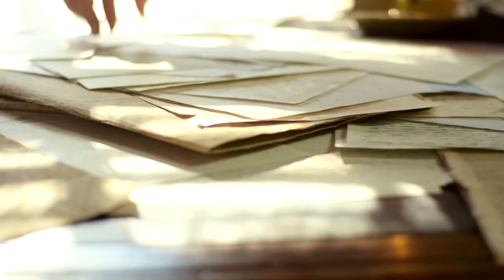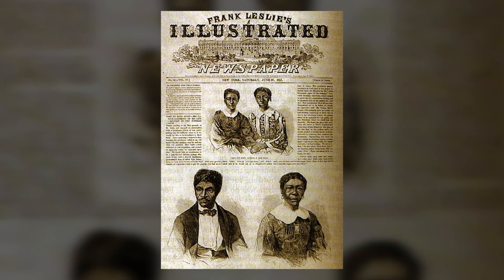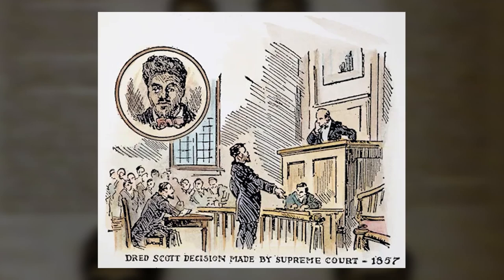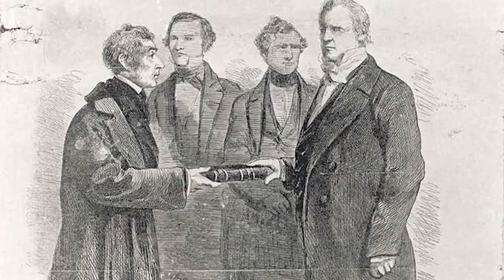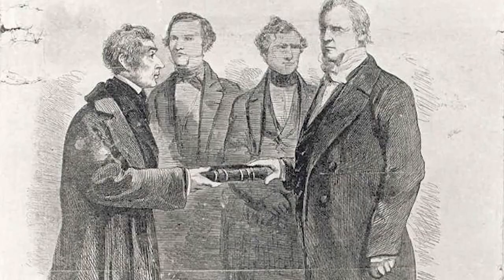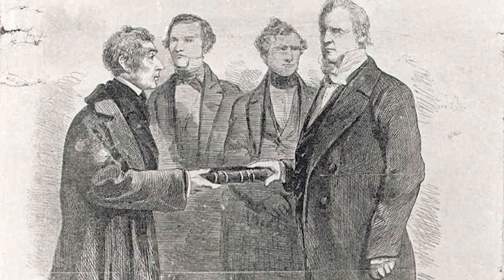Moreover, Buchanan actively interfered with slaveholding interests and attempted to influence the court's decision in Dred Scott v. Sanford. In that decision, the Supreme Court denied slave Dred Scott the right to citizenship and also recognized that Congress could not prohibit slavery in the territories. Buchanan tried to influence the justices to rule in favor of slave owners. His interference in the judicial system was a prime example of a violation of judicial independence and fairness.